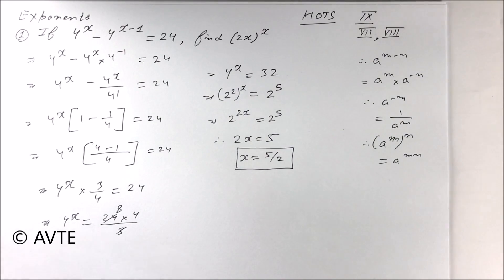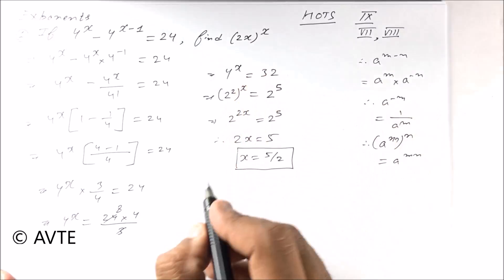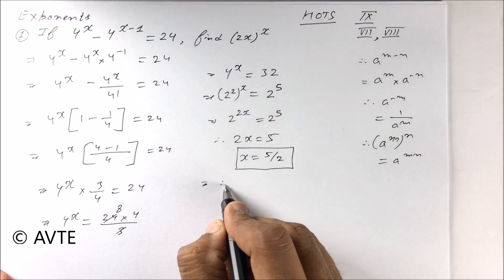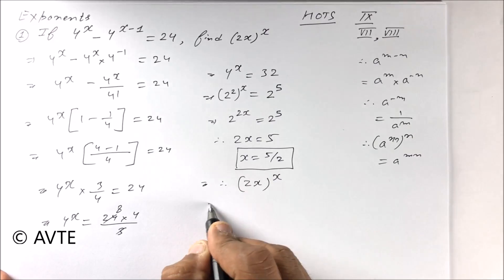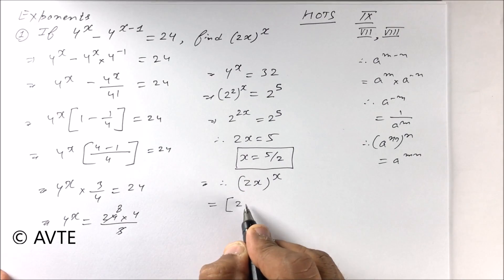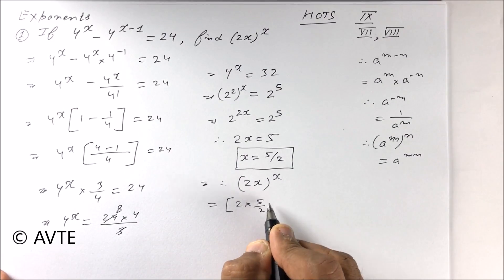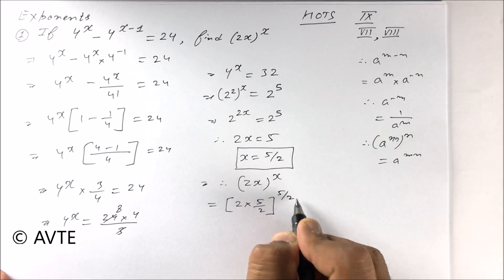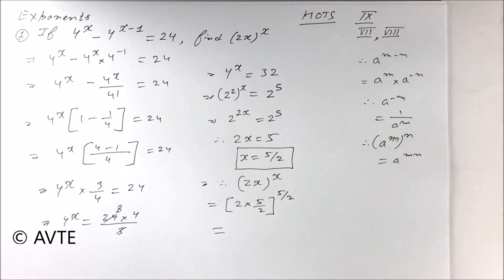Now our main aim is to find this portion, that is how to find (2x) raised to power x. So this is 2 into 5 by 2 raised to power 5 by 2, which equals 5 raised to power 5 by 2. Here the numerator is bigger.